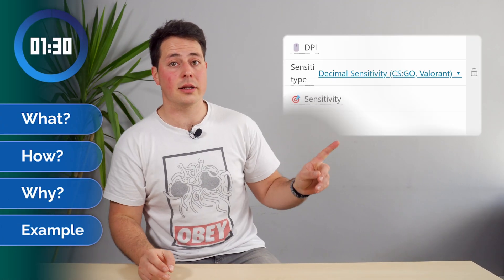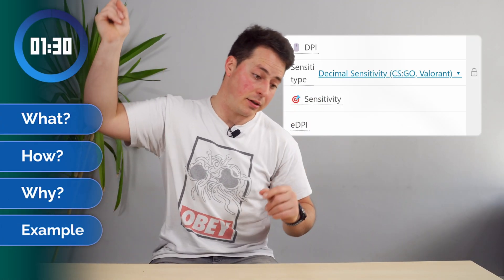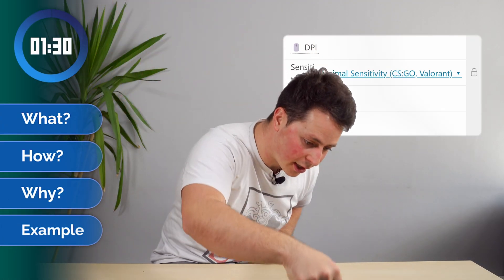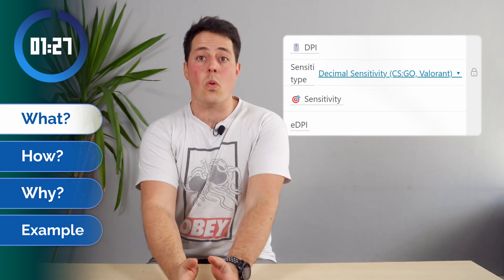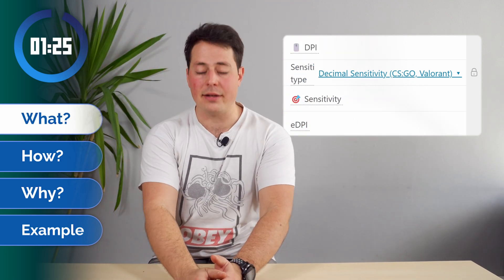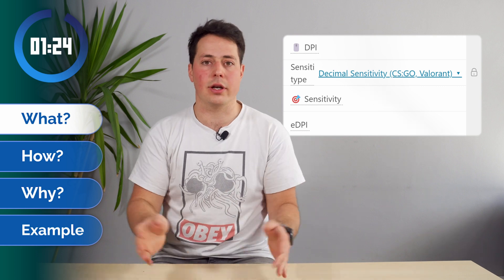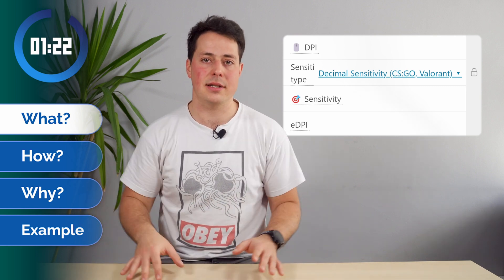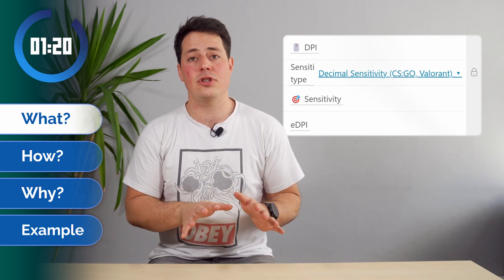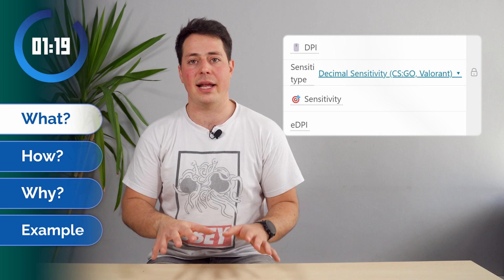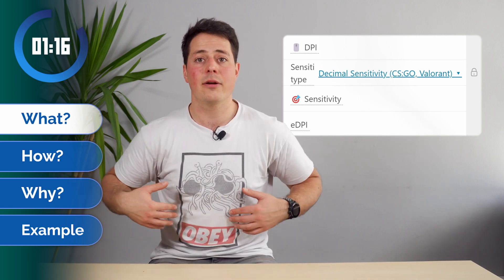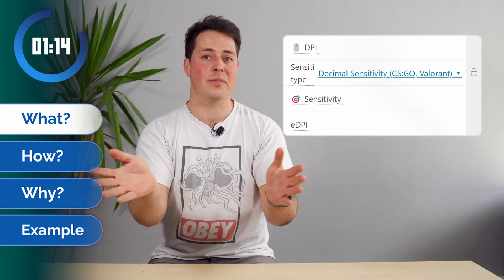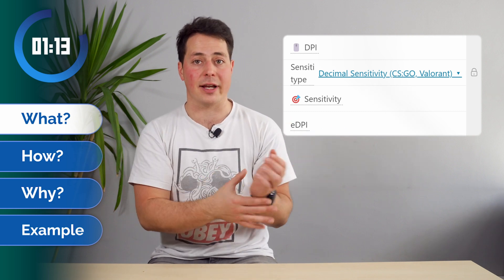We have four questions to answer, a calculator to showcase, and 90 seconds on the clock starting now. The first question is: what does this calculator do? It helps you calculate the eDPI of your gaming system, which gives you a number that relates how much mouse movement in the real world corresponds to how much in-game movement of typically the camera.